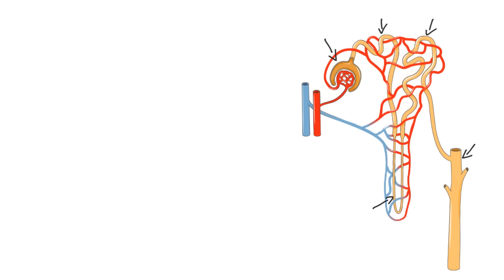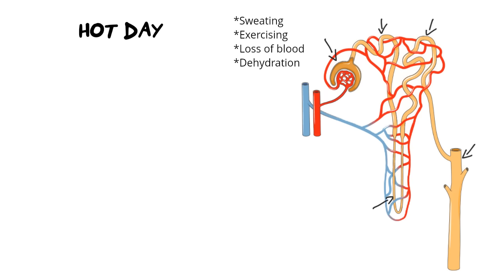I'm going to explain how homeostasis works inside the body using the example of a hot day. In tests and exams, you could be given a scenario involving excessive sweating, exercising, blood loss, or dehydration — you can use this same answer for any of those. With all homeostatic functions, we always start our explanation with the stimulus. The stimulus on a hot day is going to be a change in the amount of salt or solutes in the blood, so we will see an increase in osmolarity.